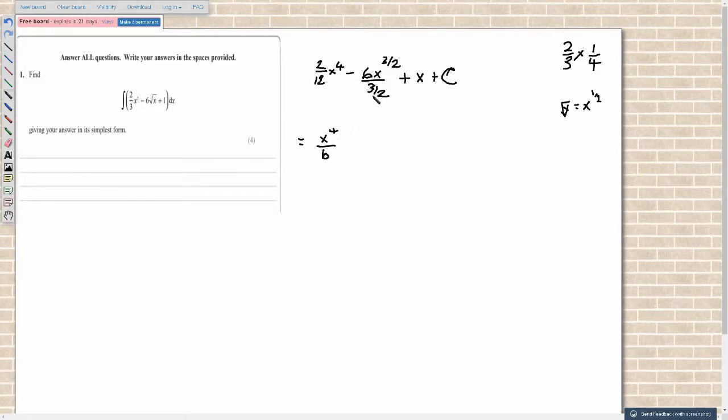This, well, 6 divided by 3 over 2. If I take the 2 on top and times it, it's going to be 12x, and divide it by the 3, it's going to be minus 4x to the 3 over 2. My writing's really bad today. Plus x, and then plus c.